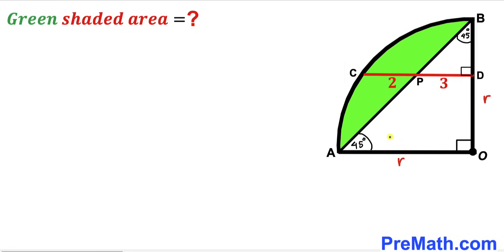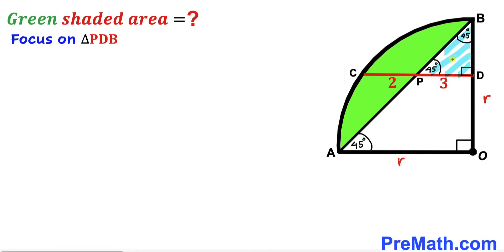Now let's observe that segment AO and segment CD are parallel to each other, since both form 90-degree angles. Therefore, if this angle is 45 degrees, then this corresponding angle is 45 degrees as well. Focusing on the small right triangle PDB, we can see this angle is 45 degrees and likewise this angle is 45 degrees, with a right angle at P. We conclude that triangle PDB is isosceles as well.